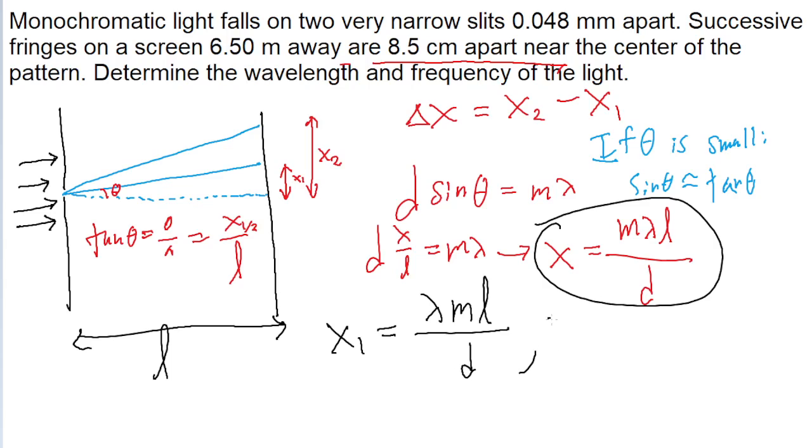And then x two is, again going off the same formula, this is equal to lambda multiplied by m plus one. And the reason why I'm writing m plus one is because again this distance we're given is talking about two adjacent fringes, so whatever m value our x one is, our x two is just one m value above that.